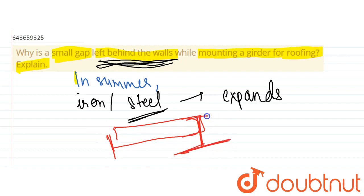So that when it expands, it does not make anything else to get affected, so it starts rolling on the roller.